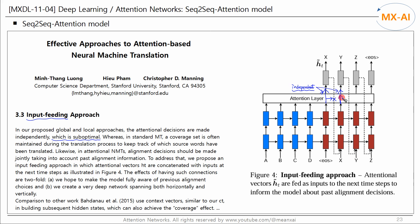Over-translation refers to some words being translated unnecessarily multiple times. In standard machine translation, a coverage set is often maintained during the translation process to keep track of which source words have been translated. Likewise, in attentional neural machine translators, attentional decisions should be made jointly, taking into account past attention information.